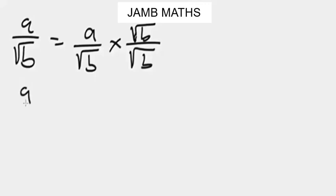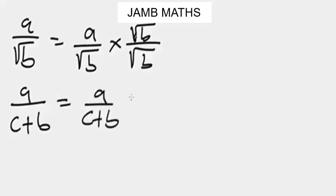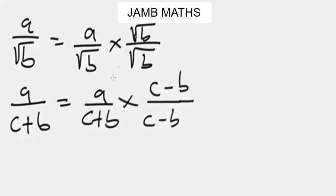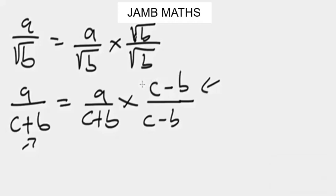For the rationalization rule, if you have something like a over c plus b, and you want to rationalize this kind of surd, you multiply by c minus b over c minus b. When you are dealing with surds and want to rationalize the denominator — whether it has a positive or negative sign between terms — you simply invert or change the sign of the original sign in the denominator. This is the conjugate method for rationalization.